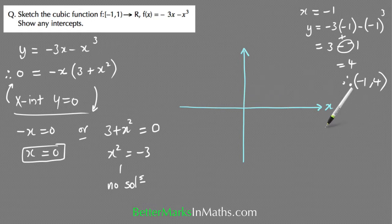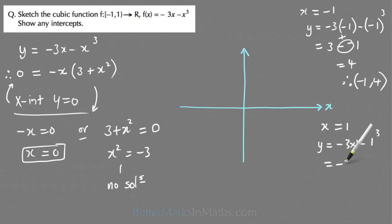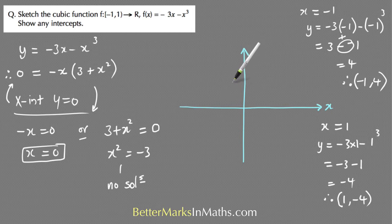And then if x equals 1, which is the right-hand end of the graph or the biggest x value, and subbing that into the equation, you get y equals minus 3 times 1 minus 1 cubed, so minus 3 and then minus 1, which equals minus 4. Therefore the point 1 comma minus 4 is the right-hand end point of the graph.